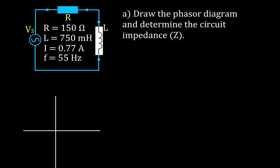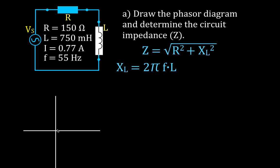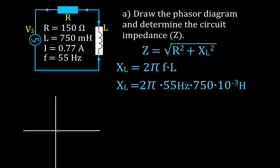We want to draw the phasor diagram and calculate the impedance for this circuit. To calculate the impedance, we use Z equals the square root of R squared plus the inductive reactance XL squared. We don't know the inductive reactance, so we calculate it first: XL equals 2 times pi times frequency times inductance — 2π × 55 Hz × 750 millihenries (750 × 10⁻³). That gives us an inductive reactance of 259 ohms.